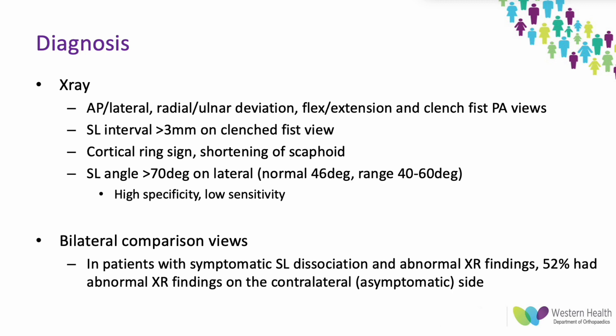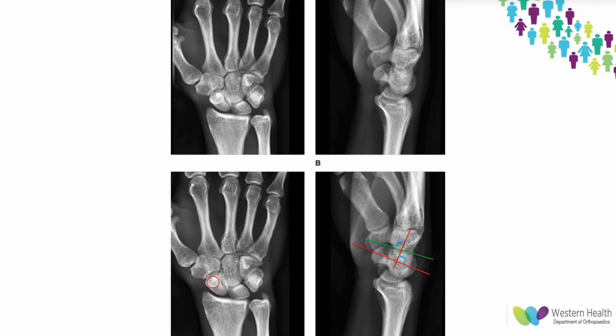This x-ray shows DISI. On the left, the cortical ring sign is visible where increased cortical bone appears because the scaphoid is flexed and appears shortened. On the right, there is an increased scapholunate angle — the green line represents the long axis of the scaphoid, and the red line represents the long axis of the lunate, perpendicular to its distal articular surface.